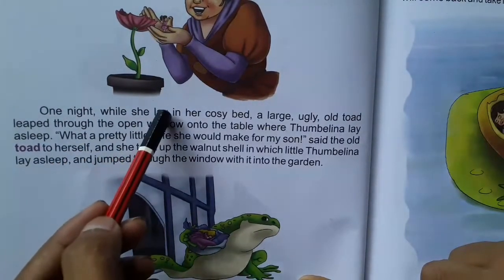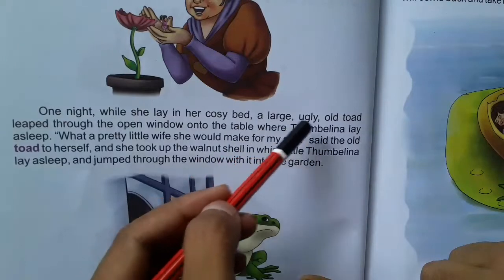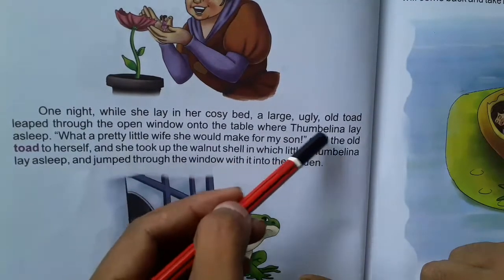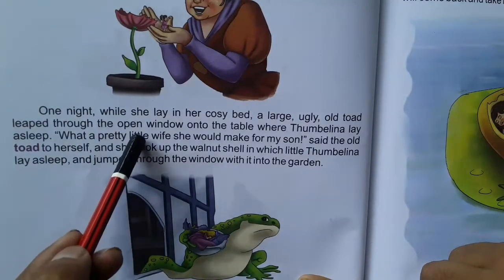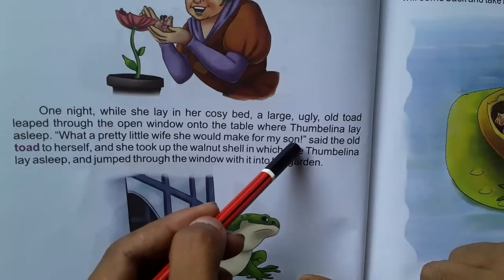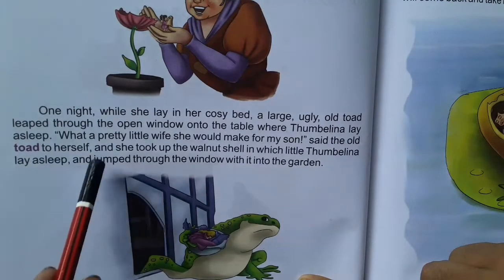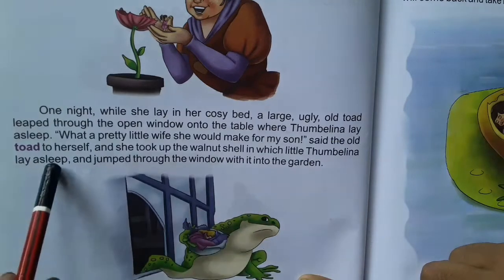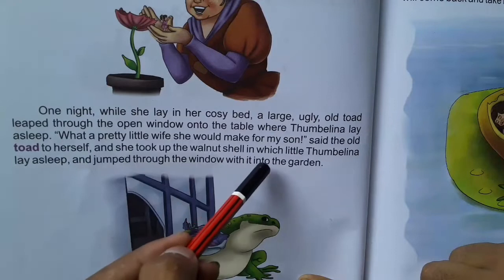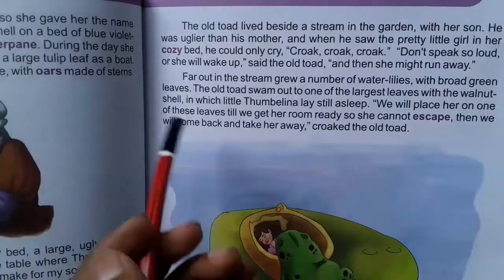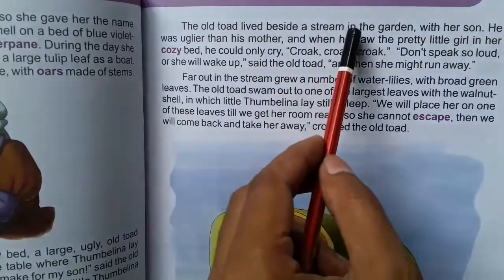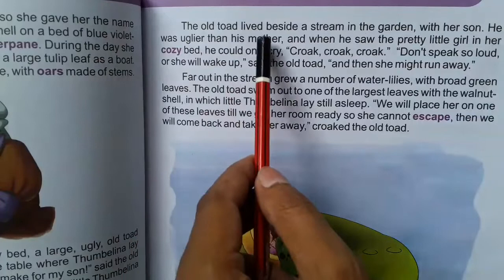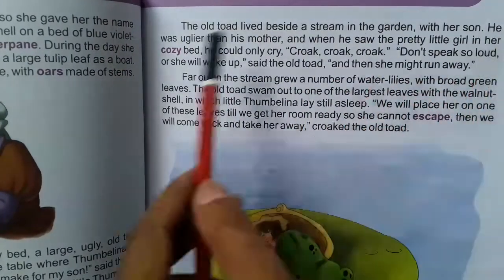One night while she lay in her cozy bed, a large ugly old toad leaped through the open window onto the table where Thumbalina lay asleep. 'What a pretty little wife she would make for my son,' said the old toad to herself. And she took up the walnut shell in which little Thumbalina lay asleep and jumped through the window with it into the garden. The old toad lived beside a stream in the garden with her son.